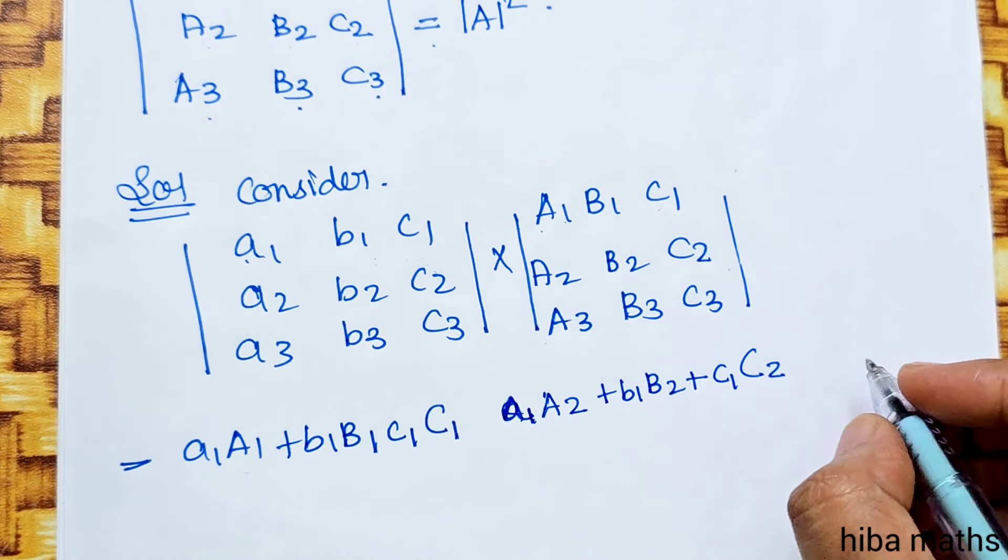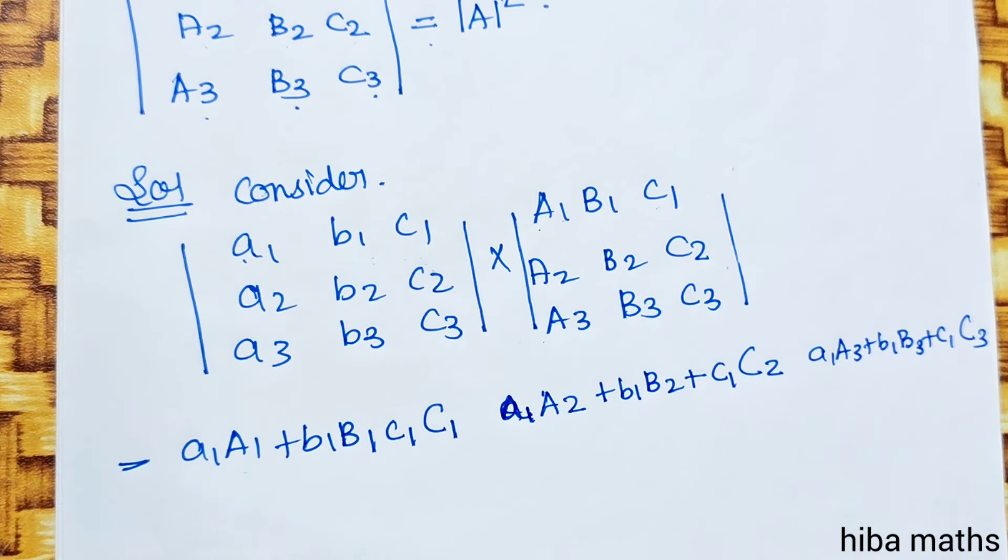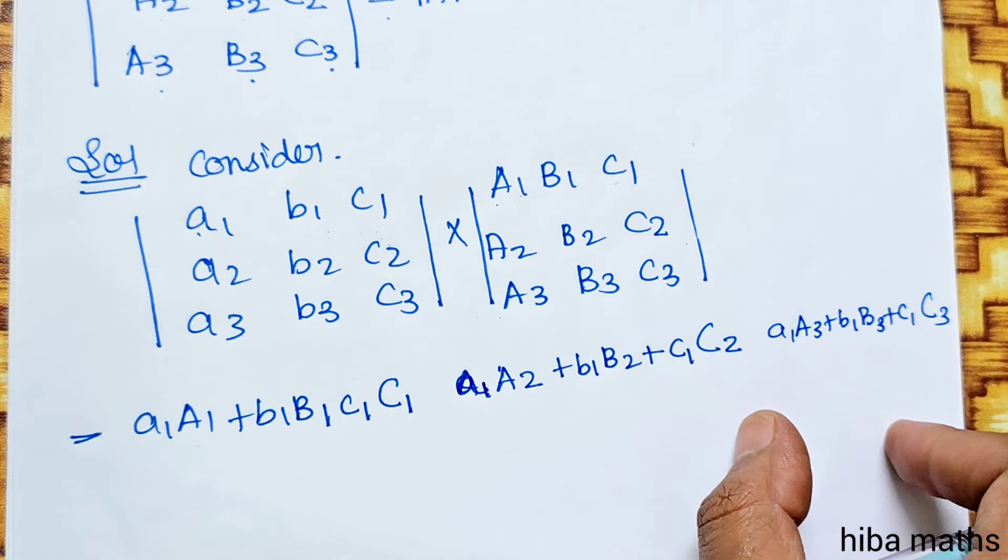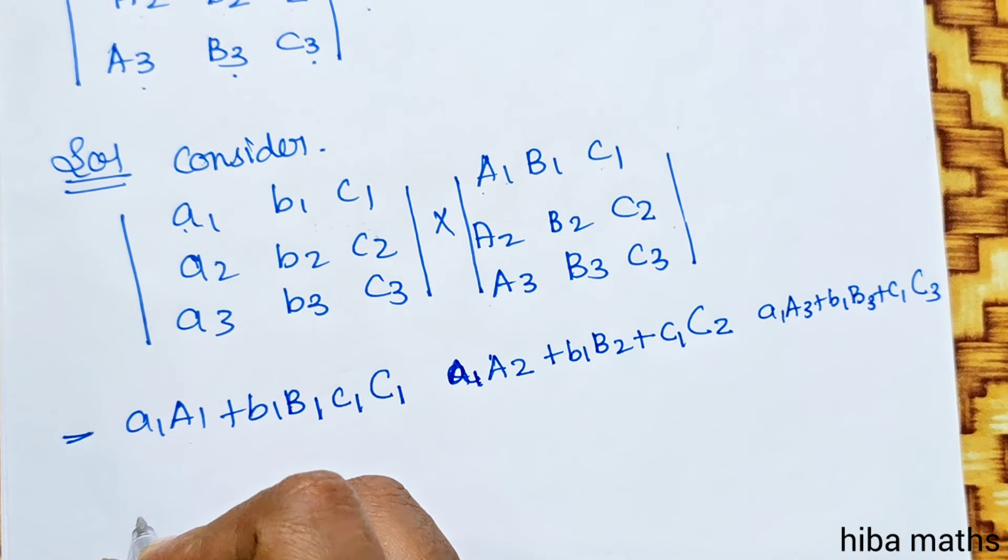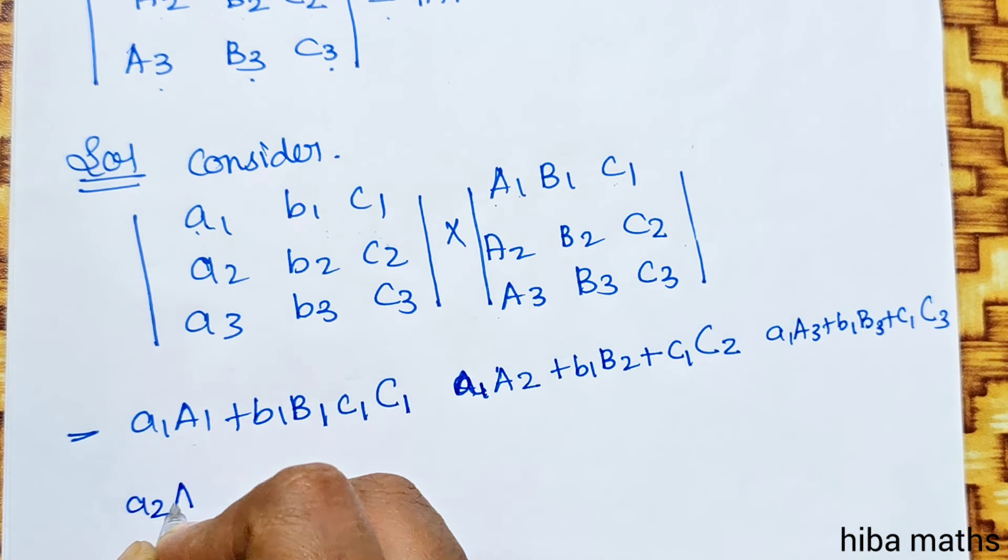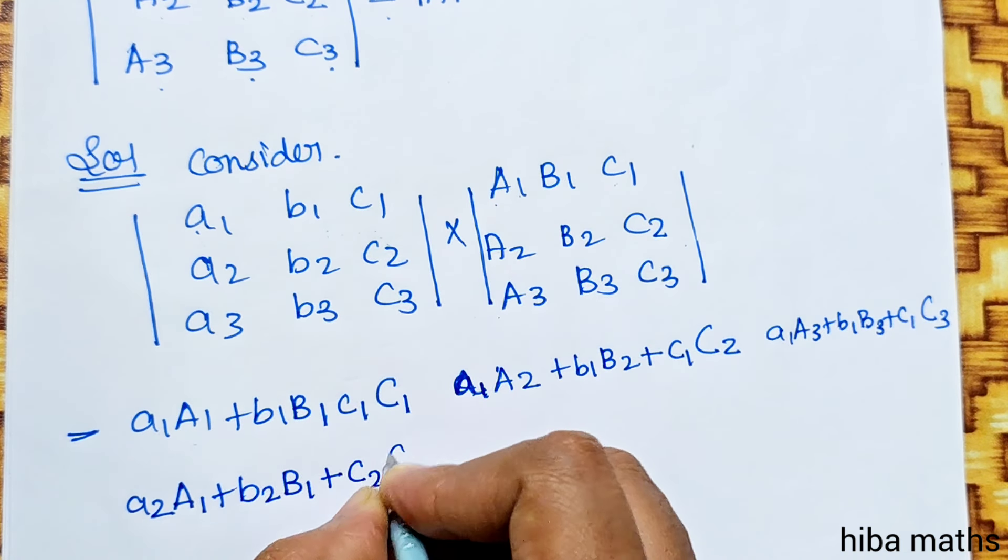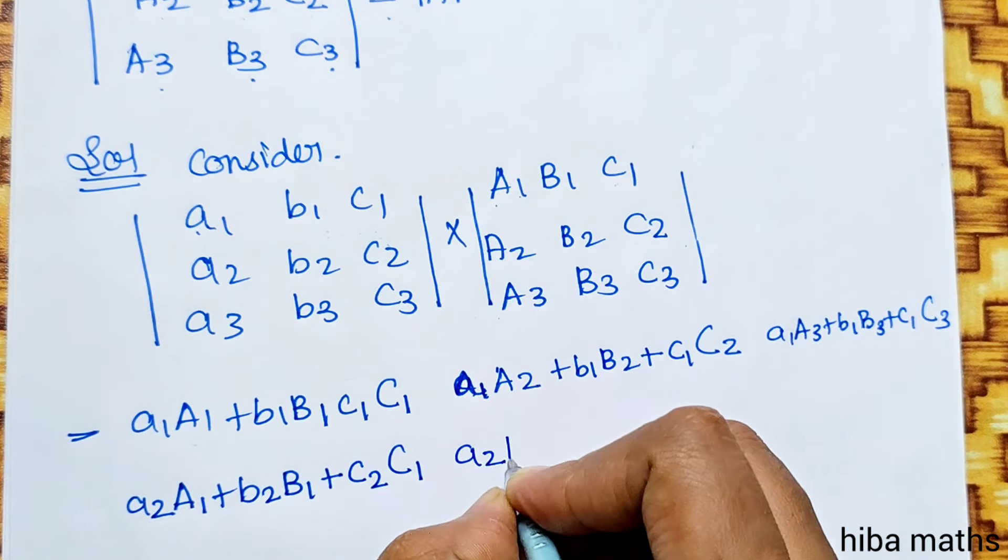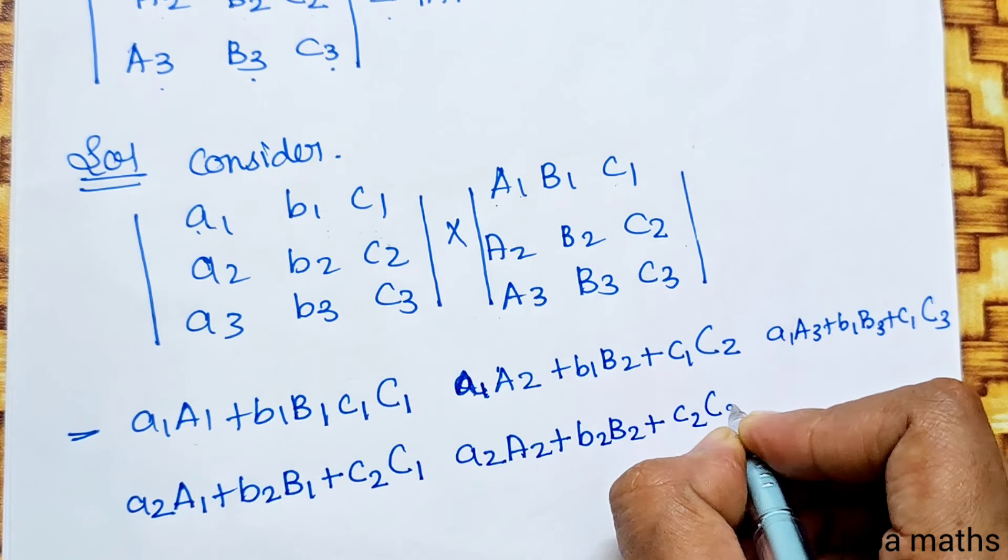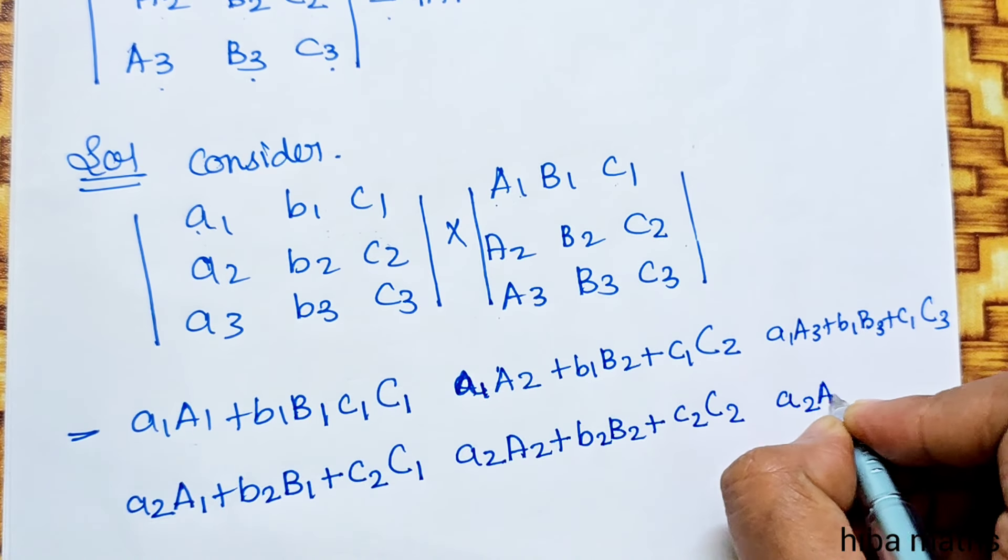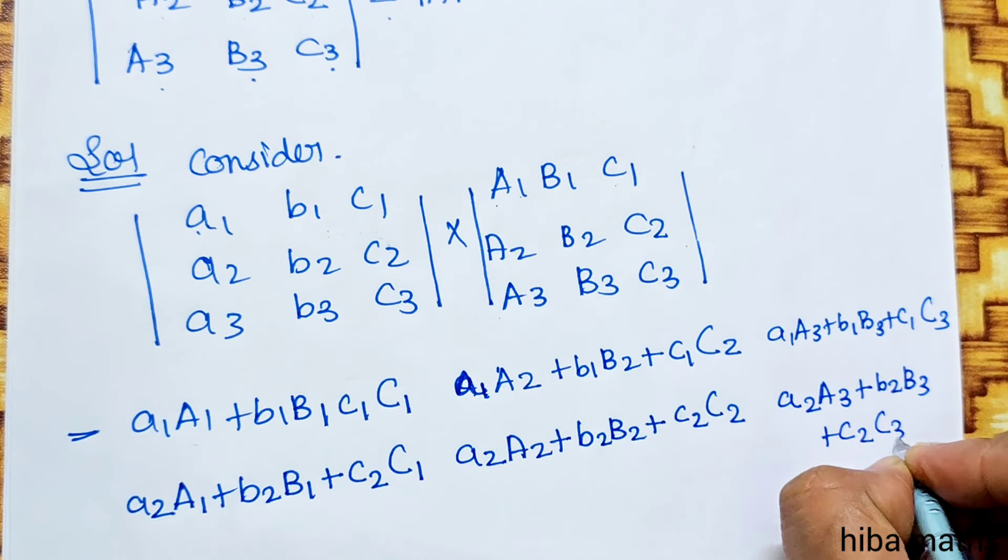We will do row by column. a1 A1 plus b1 B1 plus c1 C1 for first row first column. Then first row second column: a1 A2 plus b1 B2 plus c1 C2. First row third column: a1 A3 plus b1 B3 plus c1 C3.